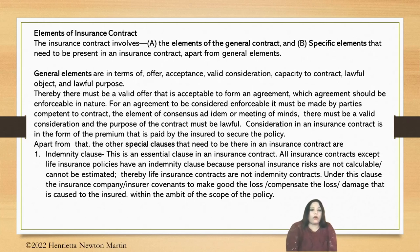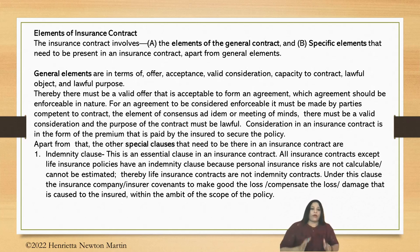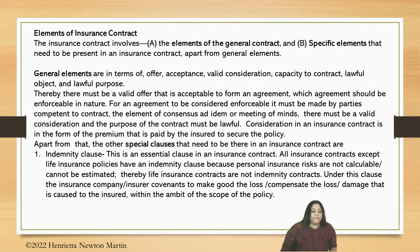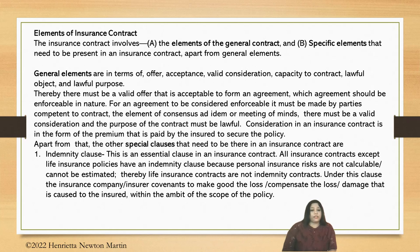What are the elements of an insurance contract — what makes it different from other contracts? Of course, the normal elements would be the general elements always available in other contracts as well. There are general elements and, when talking about an insurance contract, there are also specific elements that have to be reflected in a valid insurance contract. The significant general elements that have to be there are: offer, acceptance, valid consideration, capacity to contract, lawful object, and lawful purpose.